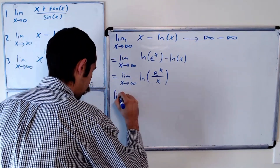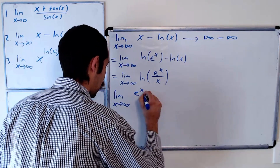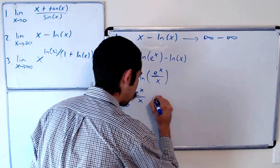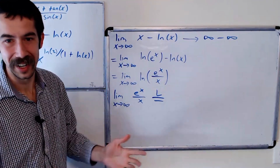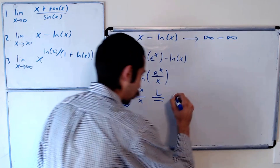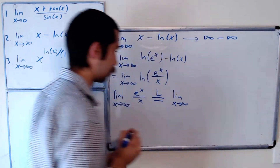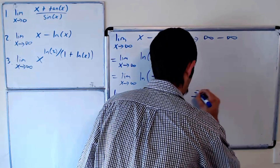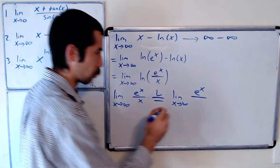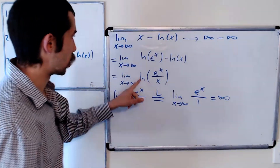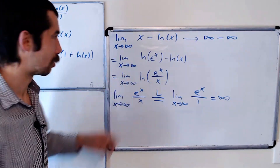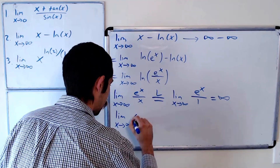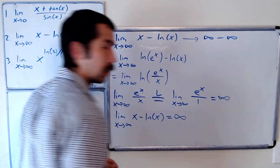The limit as x goes to infinity of e to the x over x — well, that's going to be indeterminate form: infinity over infinity. So this is equal to, by L'Hopital's rule, the limit as x goes to infinity of the derivative of e to the x, which is e to the x, over the derivative of x, which is just 1. So this is equal to infinity. And so our limit up here is the natural log of infinity, which is also infinity. So the limit as x goes to infinity of x minus ln of x is also equal to infinity.